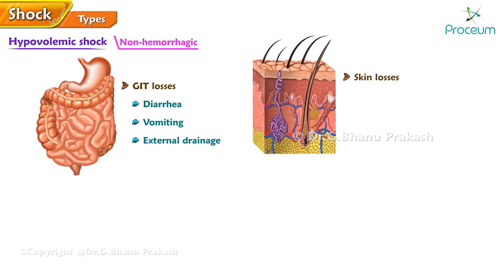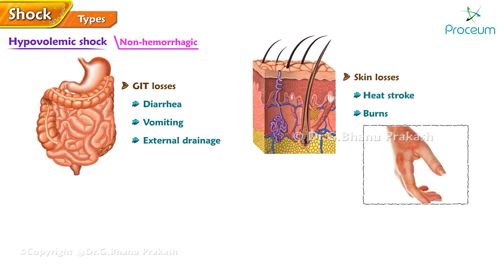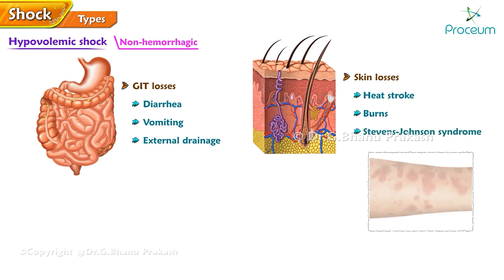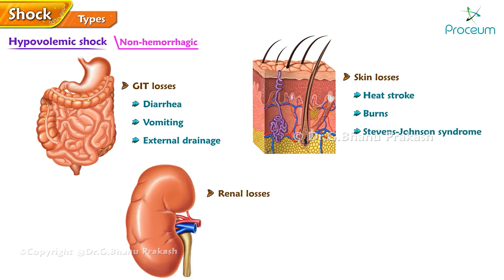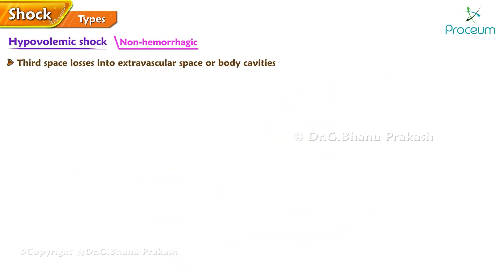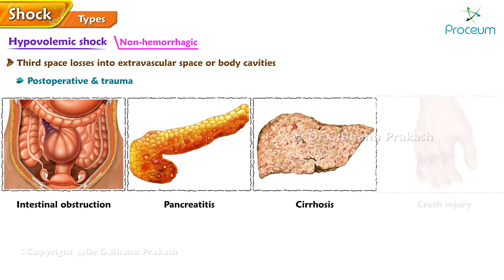Additional causes of non-hemorrhagic shock include skin losses such as heat stroke; burns and severe dermatologic conditions including Stevens-Johnson syndrome; renal losses such as excessive drug-induced or osmotic diuresis, salt-wasting nephropathies, and hypoaldosteronism; third-space losses into the extravascular space or body cavities such as post-operative trauma, intestinal obstruction, pancreatitis, cirrhosis, and crush injury.